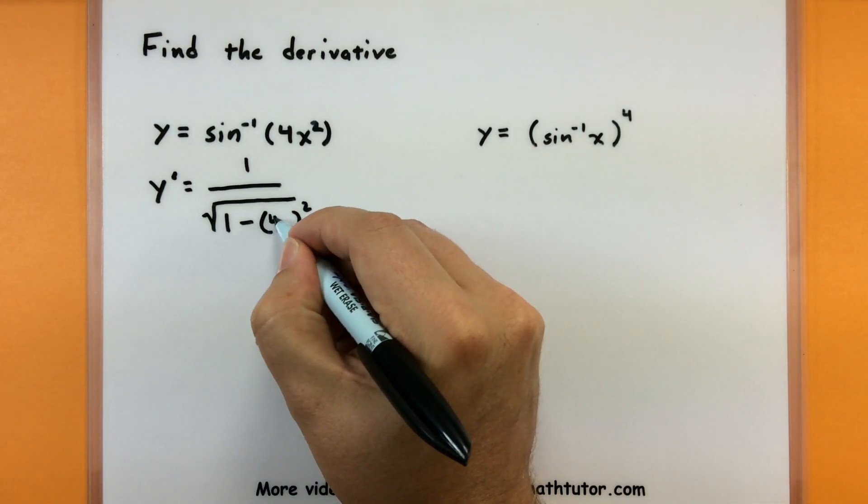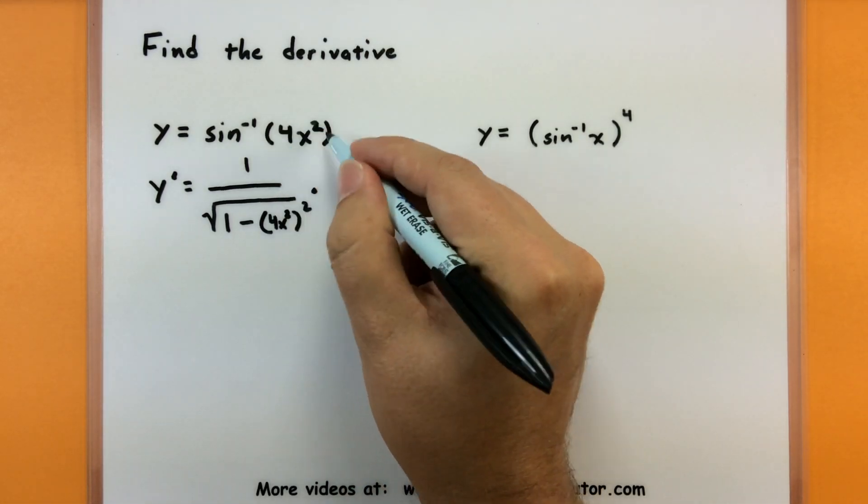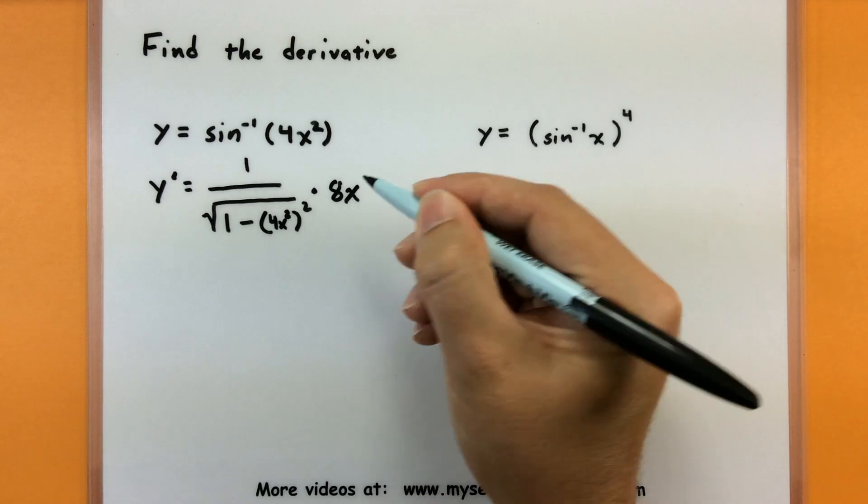If you look back at my rule sheet, it says 1 minus x squared. I'm not going to write that x in there because that x is really just a stand-in for whatever the inside piece is. In this case, it's a 4x squared. So using that chain rule, the inside would stay exactly the same, 4x squared, multiplied by the derivative of the inside, I have an 8x.